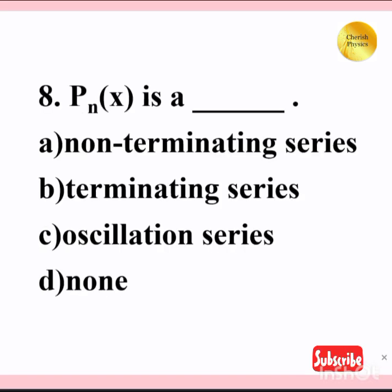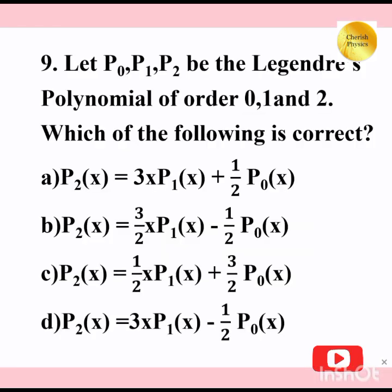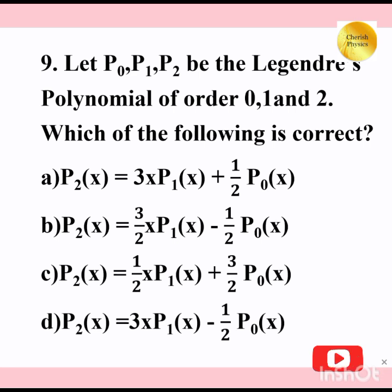Pn(x) is a — [blank]. Let P₀, P₁, and P₂ be the Legendre's polynomials of order 0, 1, and 2. Which of the following is correct?